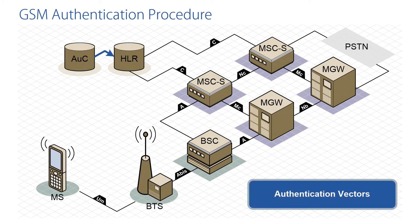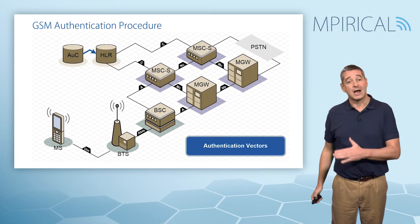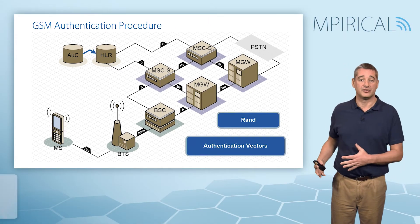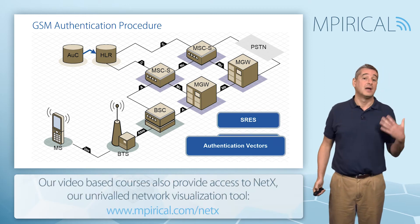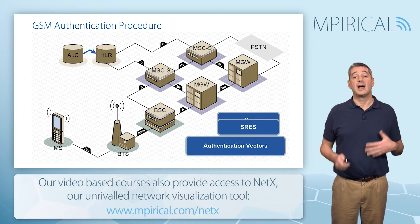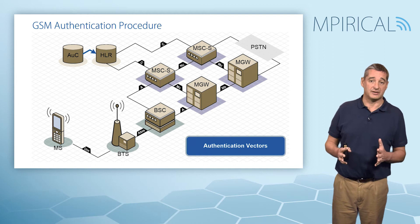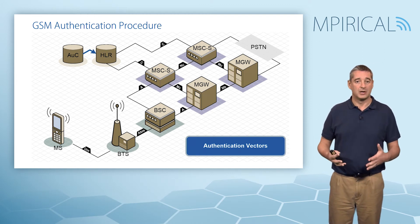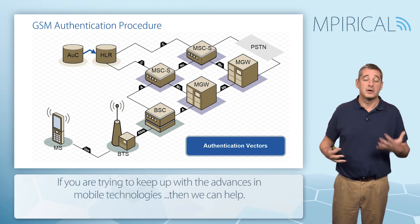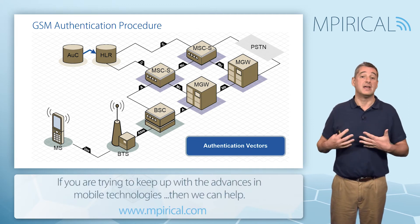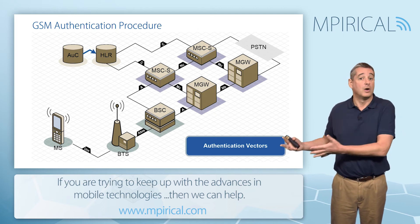The GSM authentication procedure begins with the authentication center sending authentication vectors down to the HLR, the home location register. The authentication vectors are made up of the random number, SRES the signed response, and Kc the cipher key. We don't typically send just one authentication vector — we send a whole bank of them, so that the HLR holds a number of security parameters ready for authentication for each subscriber, covering GSM, GPRS, and also UMTS.